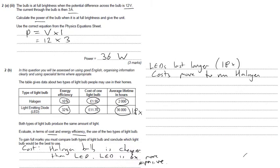In terms of efficiency, we can clearly see the LED is a more efficient bulb. So we could say, under efficiency, the LED wastes less energy.